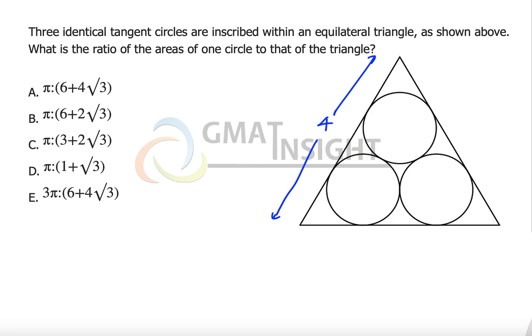A few constructions which are needed: the first thing we have to do is join the center of the circle with the point of tangency because this angle always becomes 90 degrees, and the same thing I'm going to do across all the cases.